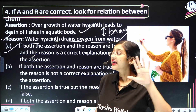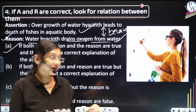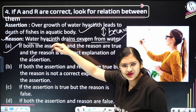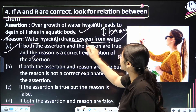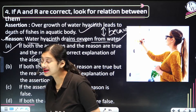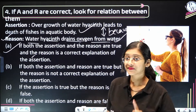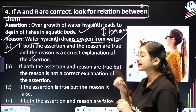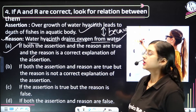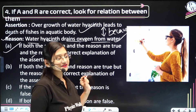If there is no connection between the two statements — if I add 'because' and the reason does not answer the assertion — then I have to go for option B, which says both assertion and reason are correct but the reason is NOT a correct explanation for the assertion.